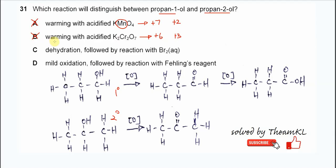For option C, dehydration followed by reaction with bromine. If these two alcohols undergo dehydration, they will form alkenes with C=C double bonds. After that, both alkenes will decolorize the bromine water. So these reactions also cannot distinguish propan-1-ol and propan-2-ol.